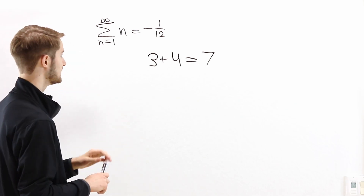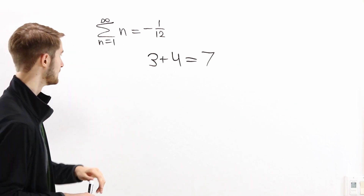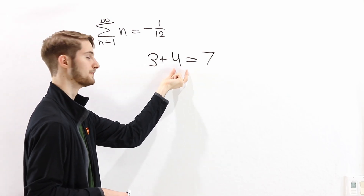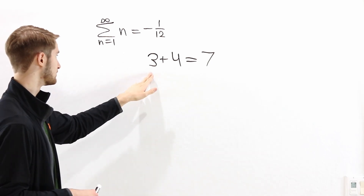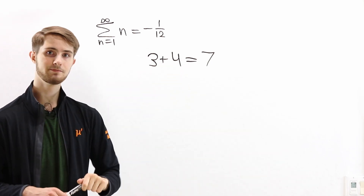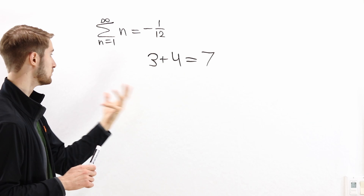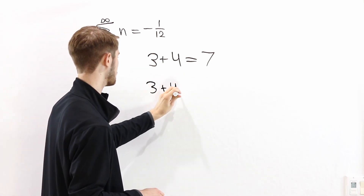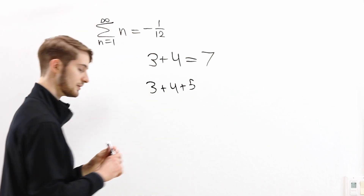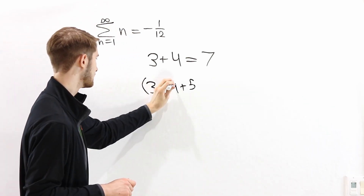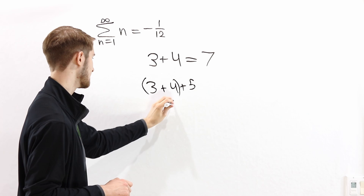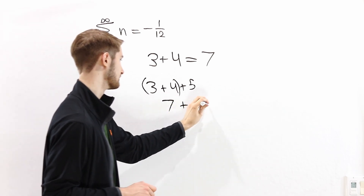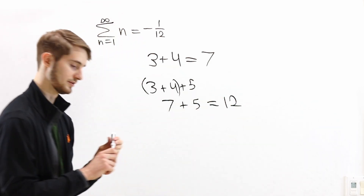What that means is that it has two inputs. So my first input is 3, my second input is 4, and the operation I do is 3 plus 4 to get 7. And if we want to add more than two things — say 3 plus 4 plus 5 — what I do is I first add two of the numbers to get 7, and then I add that answer to the remaining number to get the final result of 12.